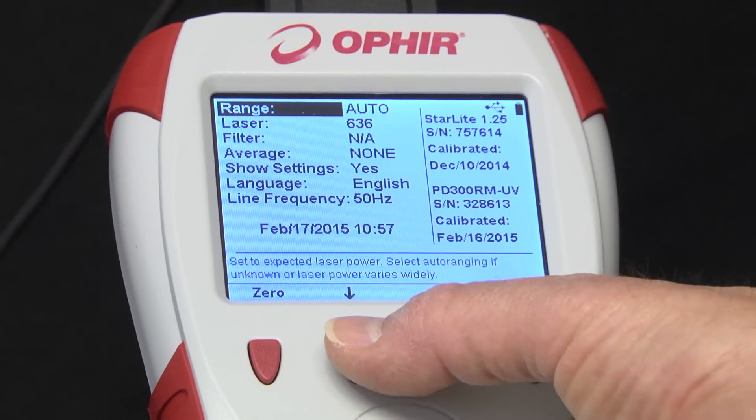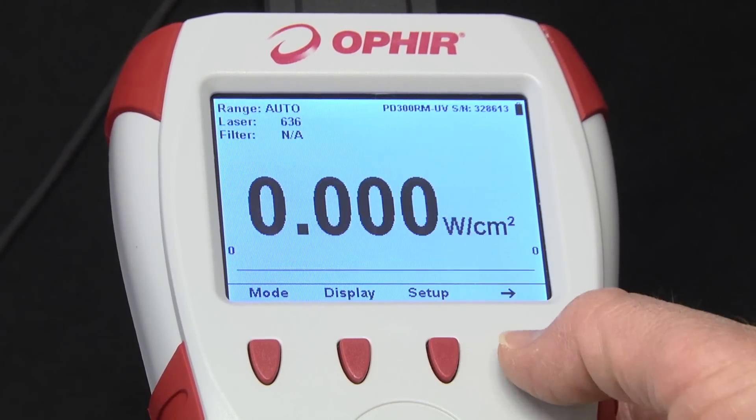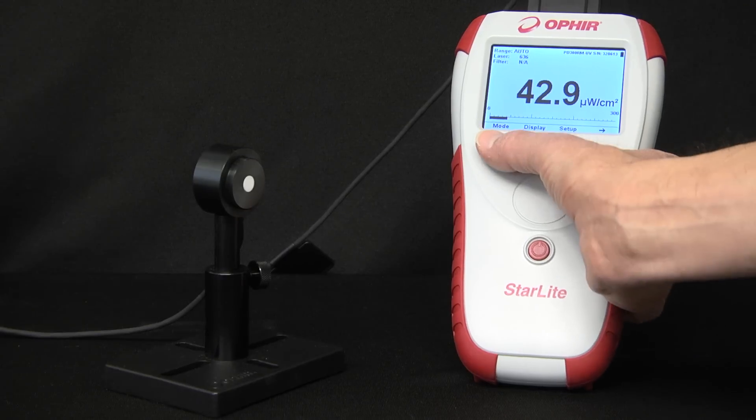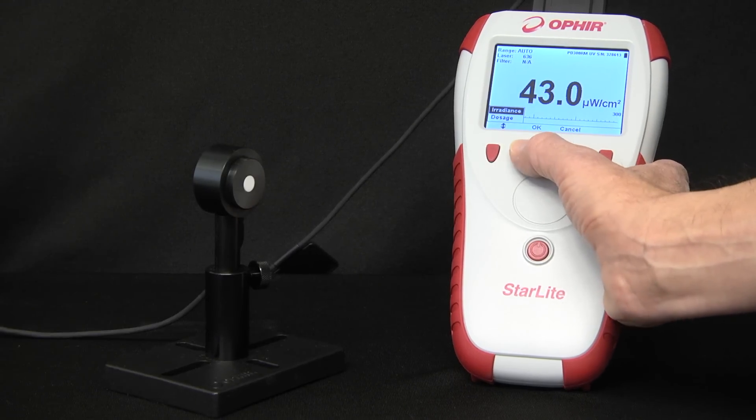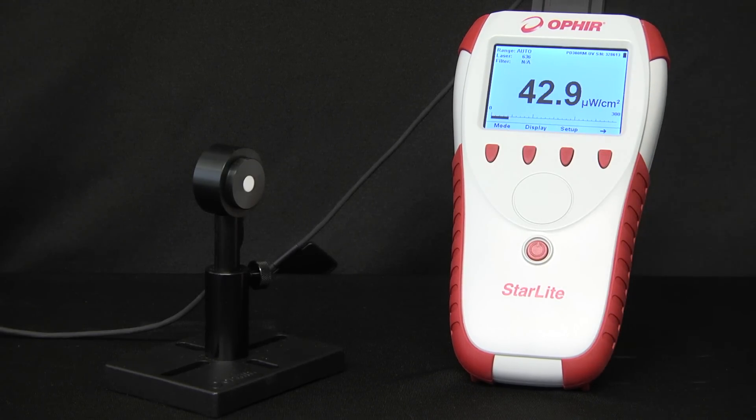We enter the wavelength of the light being measured. There are two modes of operation. In irradiance mode, the instrument displays a reading of irradiance in watts per square centimeter.